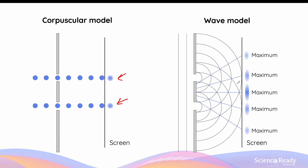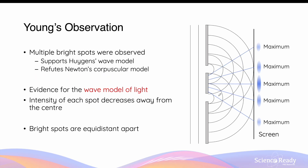In contrast, Huygens' wave model predicts that more than two spots or maxima will be formed due to the constructive interference between the wavelets that emerge out of the two slits. Eventually, Thomas Young saw that multiple bright spots were formed on the screen, which supports Huygens' wave model and refutes Newton's corpuscular model. In addition, Young noticed that the intensity of each bright spot or maximum decreases as it gets further away from the centre, or the midline between the two slits. He also noticed that although the intensity changes, the distance between adjacent maxima or bright spots remains the same.